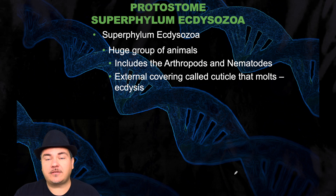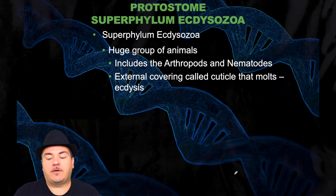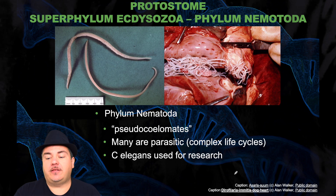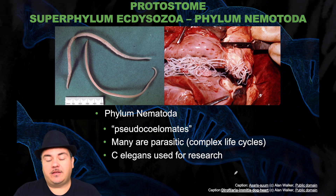The next superphylum is Ecdysozoa — a huge group of animals that includes arthropods and nematodes. They have an external covering called a cuticle that molts, and that process is called ecdysis. The first phylum within Ecdysozoa is Nematoda. These are pseudocoelomates; many are parasitic. C. elegans is a type of nematode that is often used in scientific research.